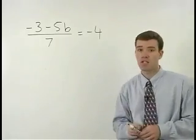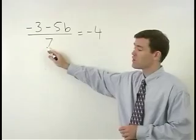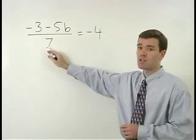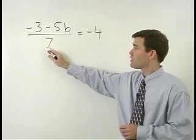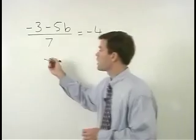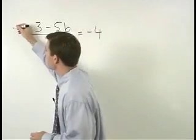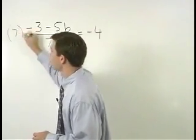So in the problem you see here, since the denominator of our fraction is 7, we get rid of the fraction by multiplying both sides of the equation by 7.